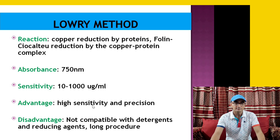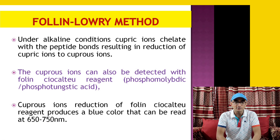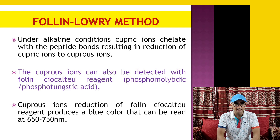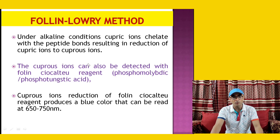Under alkaline conditions, cupric ions chelate with the peptide bonds of protein, resulting in reduction of cupric ion (Cu²⁺) to cuprous ion (Cu⁺). The cuprous ion is then detected with the Folin-Ciocalteau reagent, which is basically phosphomolybdic and phosphotungstic acid. Reduction of the Folin reagent produces a blue color complex that can be read at 655 to 750 nanometer. This is the principle of the Lowry method.